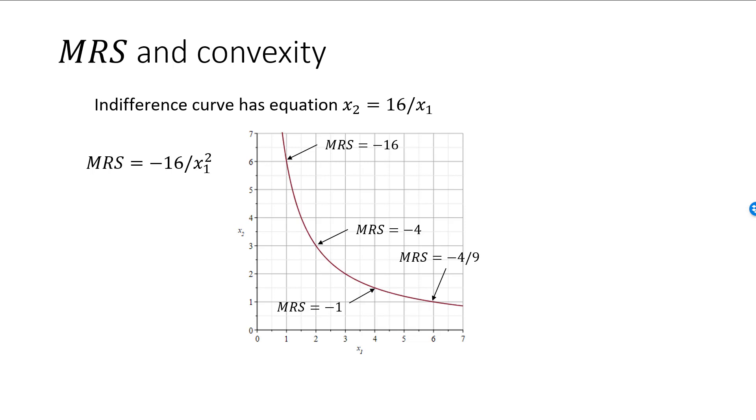Way over to the right, in the (6,1) bundle, the absolute value of MRS is now very low, and she is not willing to give up very much of good 2 for more of good 1. We cannot blame her for this, since she already has a lot of good 1 but very little of good 2 here.